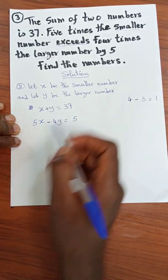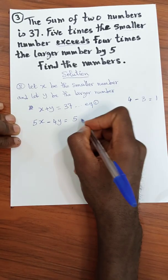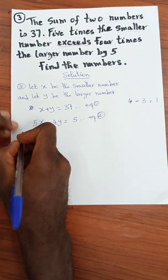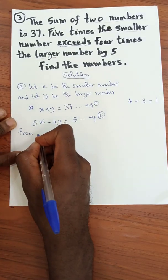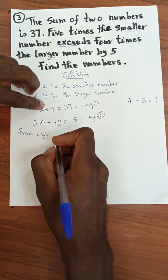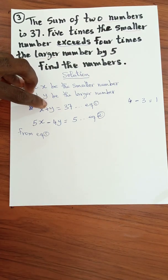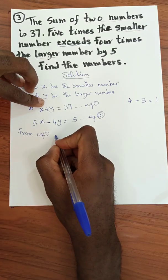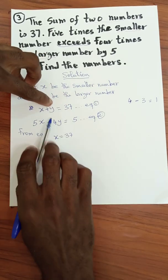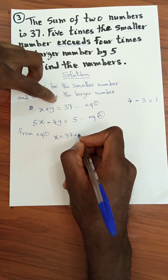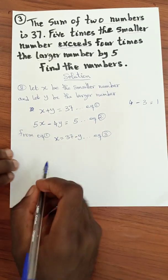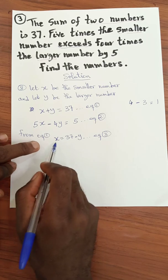This becomes a simultaneous equation in two variables. This is equation one and this is equation two. From equation one, let's make x the subject — that's the easiest approach. So x is equal to 37 minus y. Let's call this equation three.